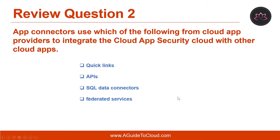Let's look at question number two. App connectors use which of the following from cloud app providers to integrate the cloud app security cloud with other cloud apps? The correct answer is APIs.